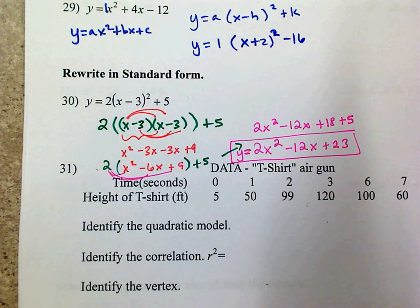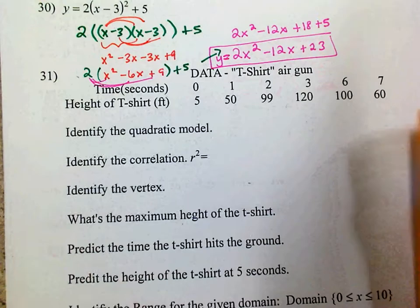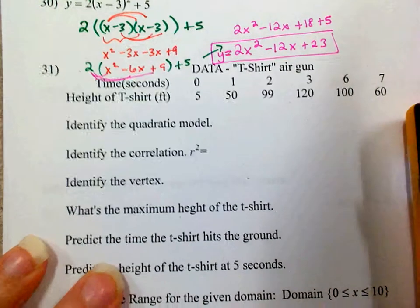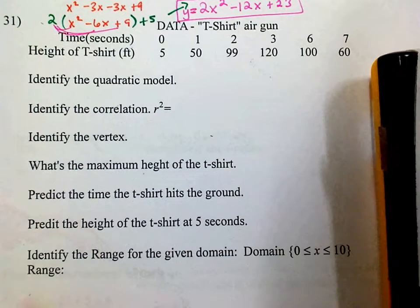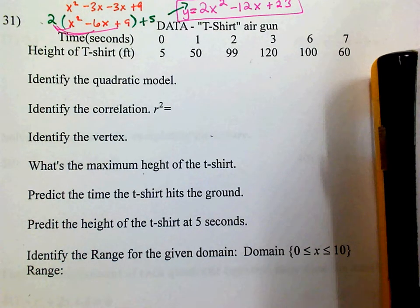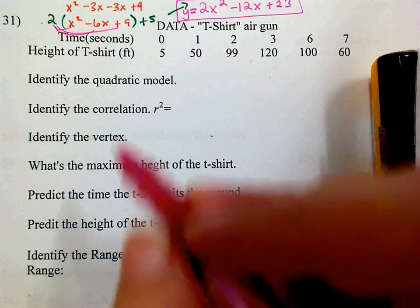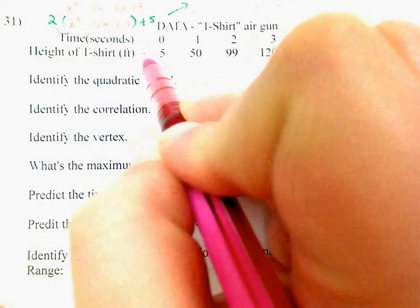Now let's talk about number 31. It says we're dealing with a t-shirt air gun. Time is going to be X and height of the t-shirt is going to be Y.